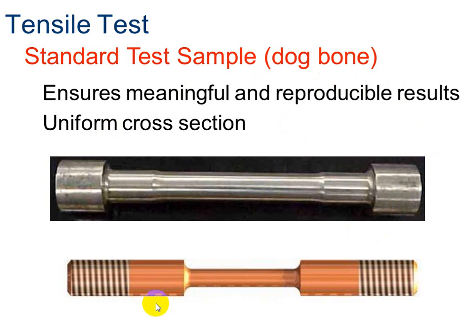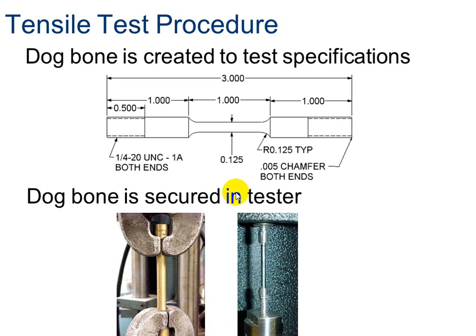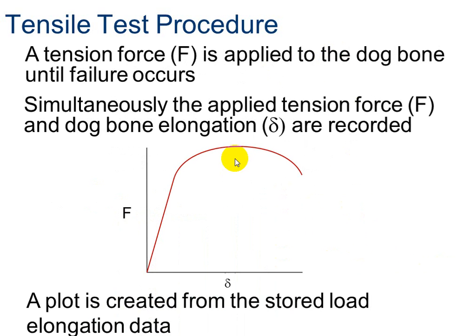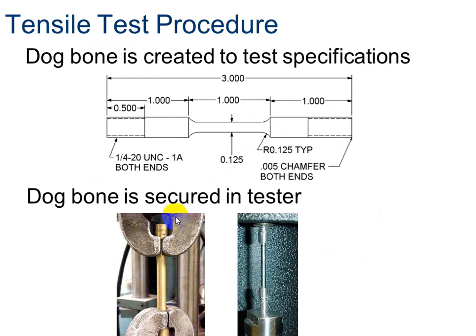Our test samples, when we go to the tensile structural stress analyzer, will look like this. We create the dog bones to a specific test specification — this is the blueprint for each one of our samples. Here's an example of red brass, and here's an example of what looks like aluminum. We put the dog bone, or the stress sample, into the tester and then we apply a force, pulling here while this end stays static.